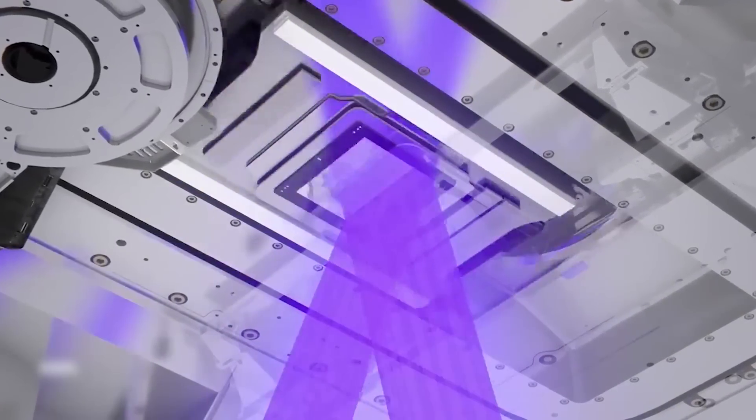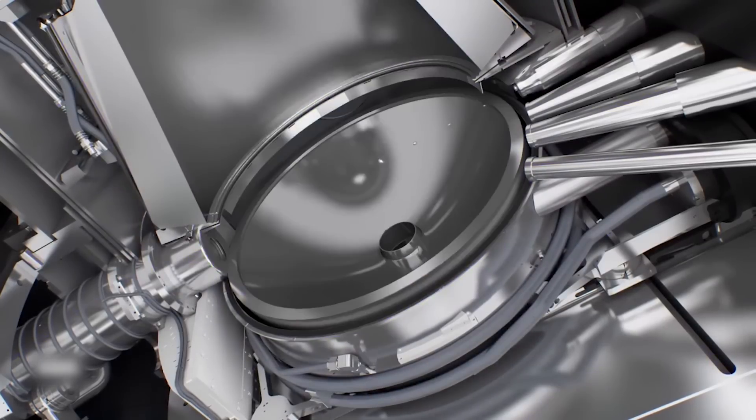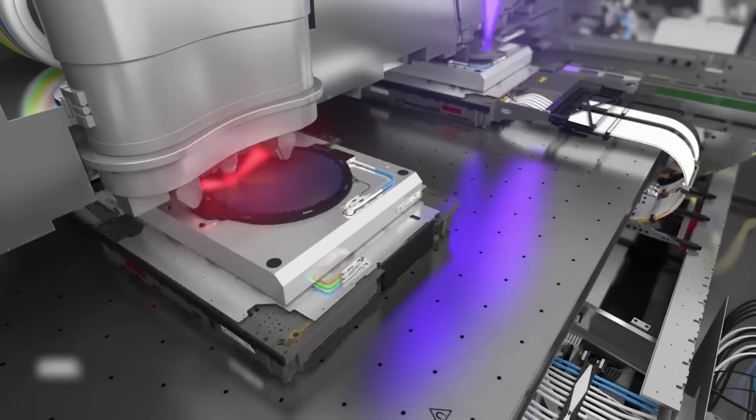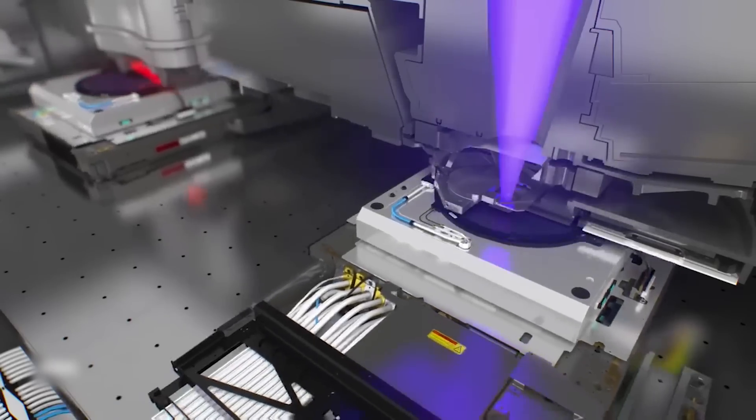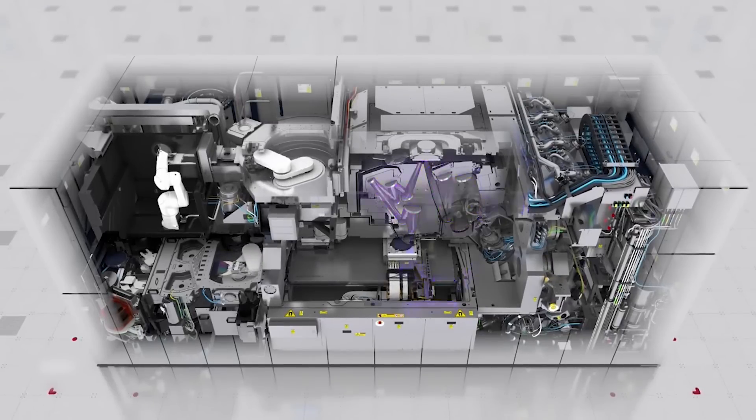Currently, it takes about two weeks to calculate the design of each mask using traditional computer processors. This can slow things down a lot, especially if a small change in the chip-making material affects the light used in the process requiring a new mask calculation.